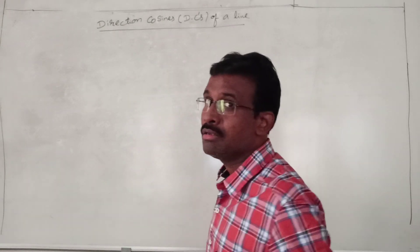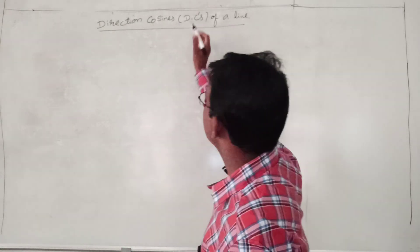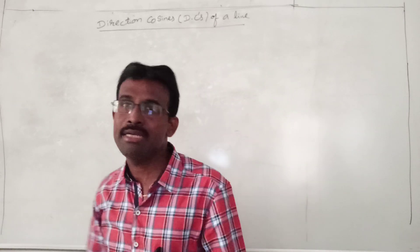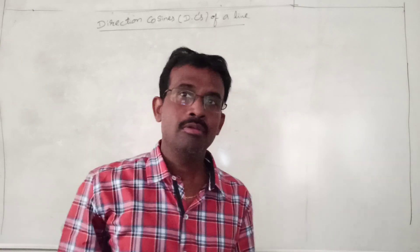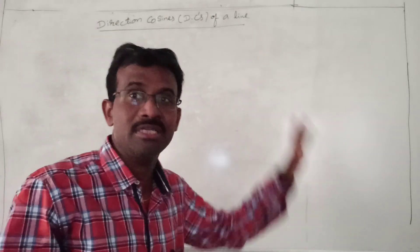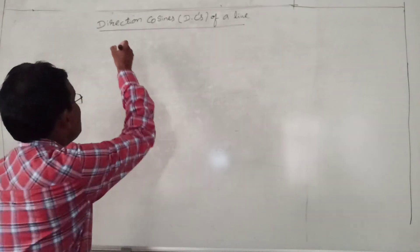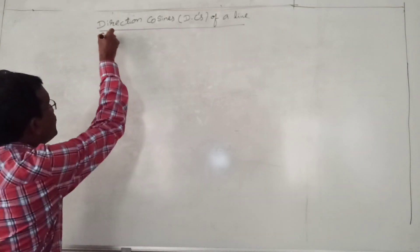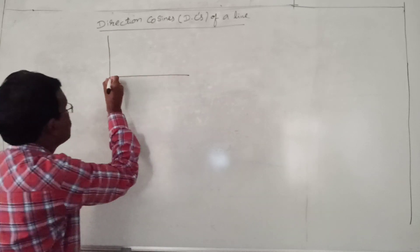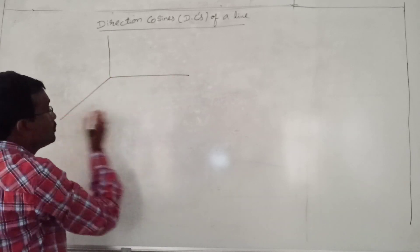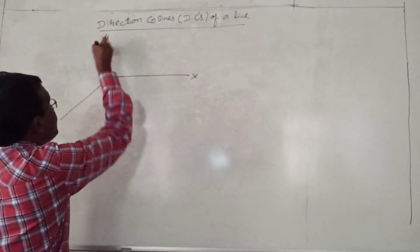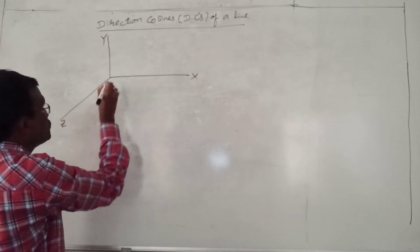Direction cosines of a line — we can call them as DCs. To define direction cosines of a line, let us take the XYZ plane. This is the X axis, this is the Y axis, and this is the Z axis.